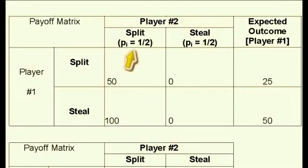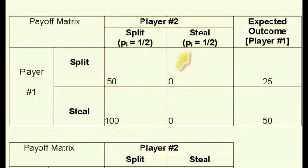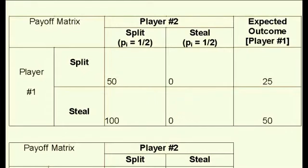The formula is: one half times the payoff when player number 1 chooses steal and player number 2 chooses split, plus one half of the payoff when both player number 1 and player number 2 choose steal. Because player number 1's payoff for choosing steal when player number 2 also chooses steal will be 0. So one half of 100 plus one half of 0 equals 50.